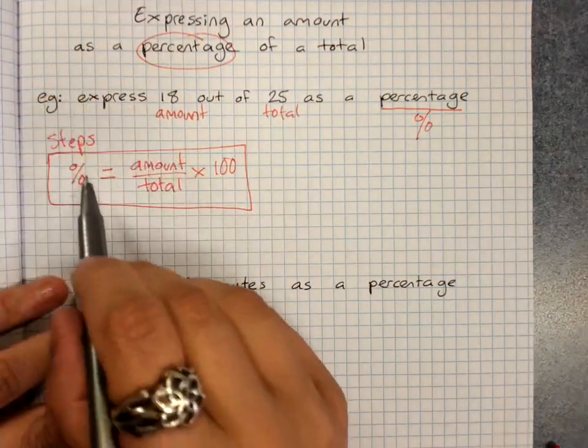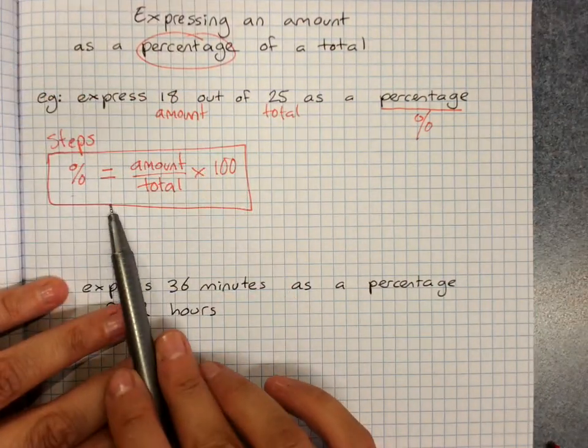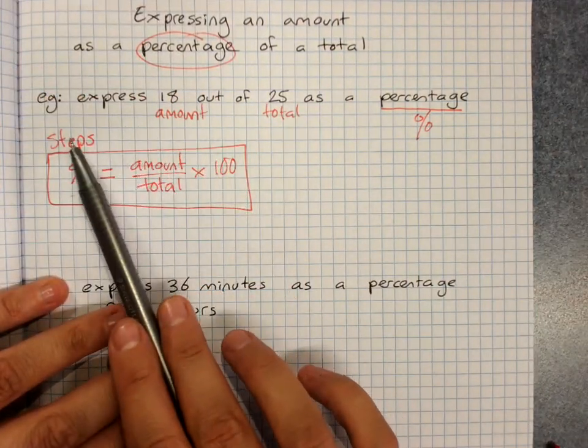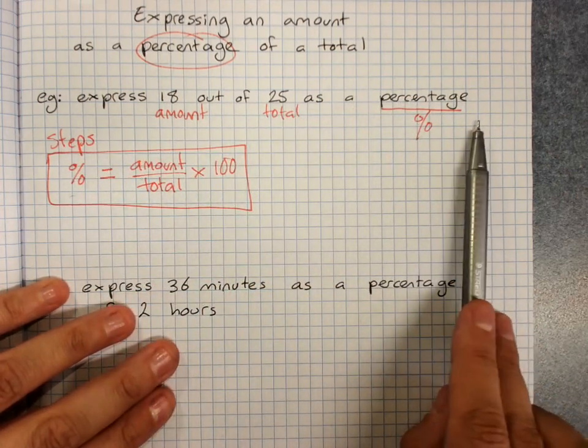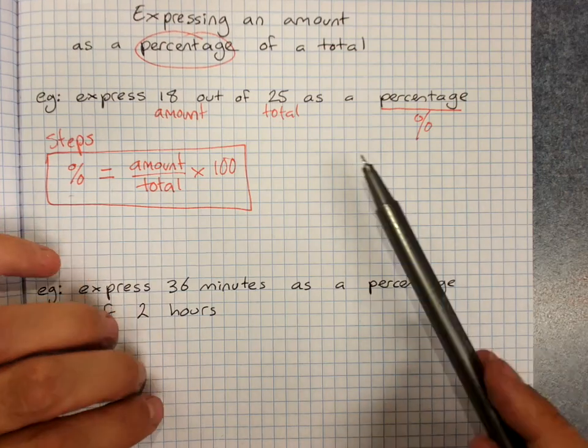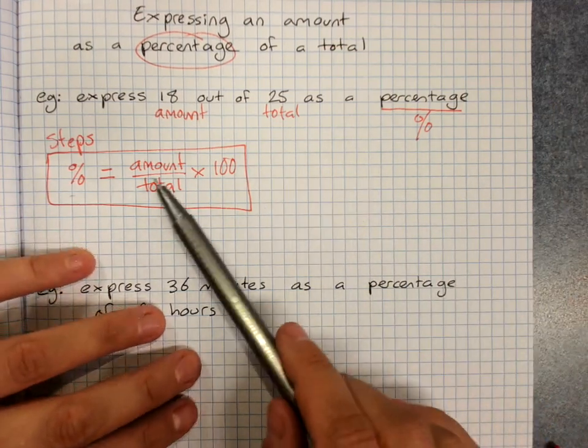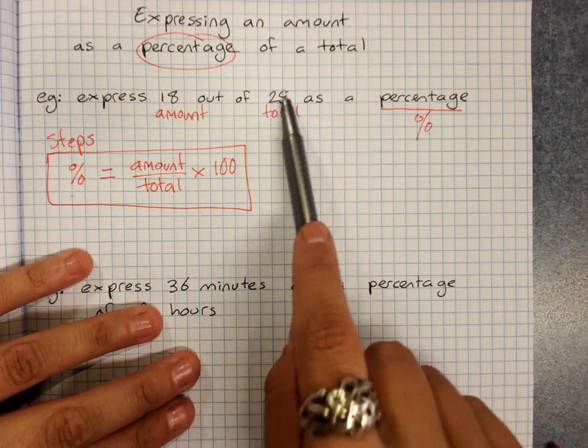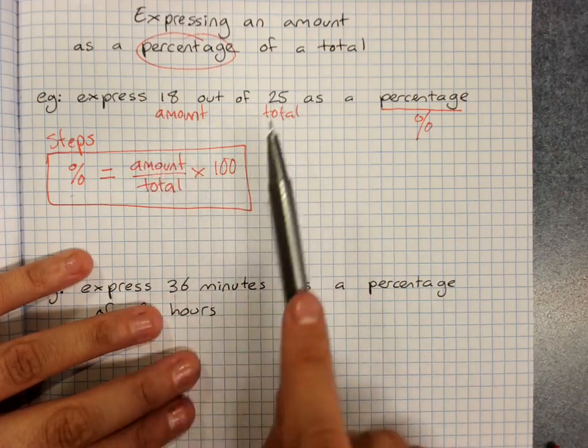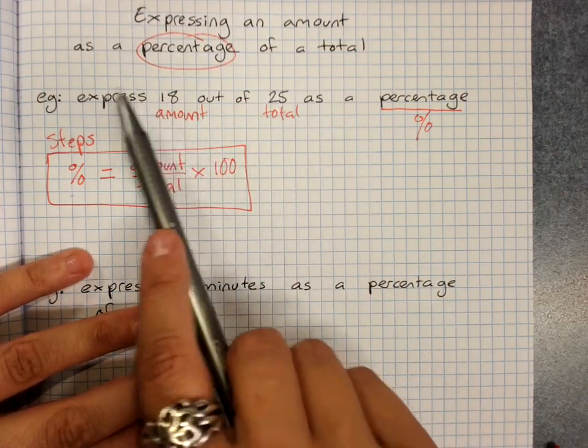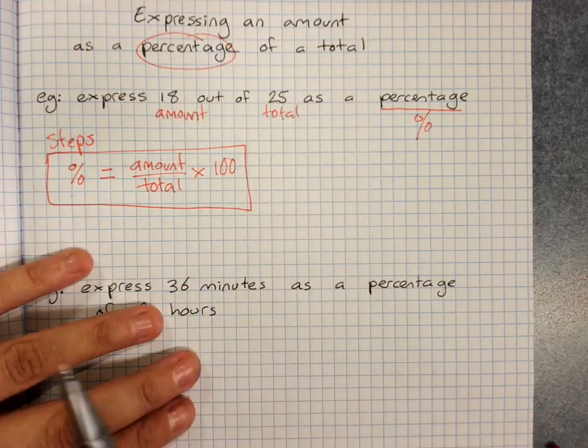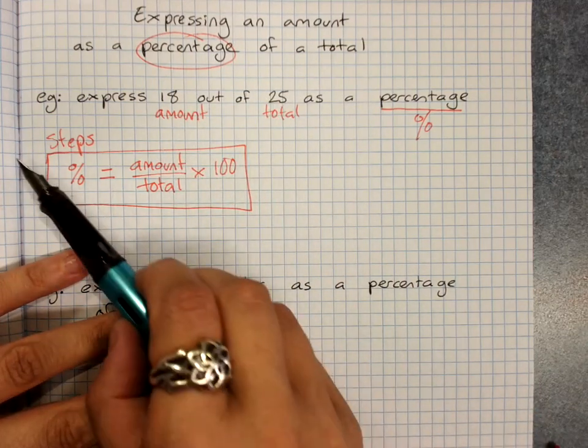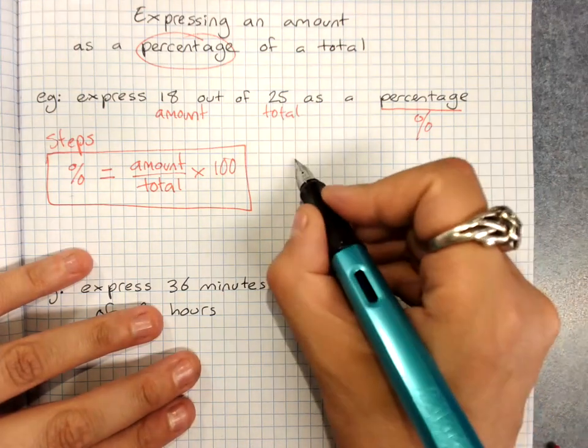Anytime they give you a question where they ask you to express something as a percentage, or say what percentage of this, they will have given you an amount and a total. And you need to work out which is which, and it's a good idea to find it in the question and circle it or underline it: amount and total.